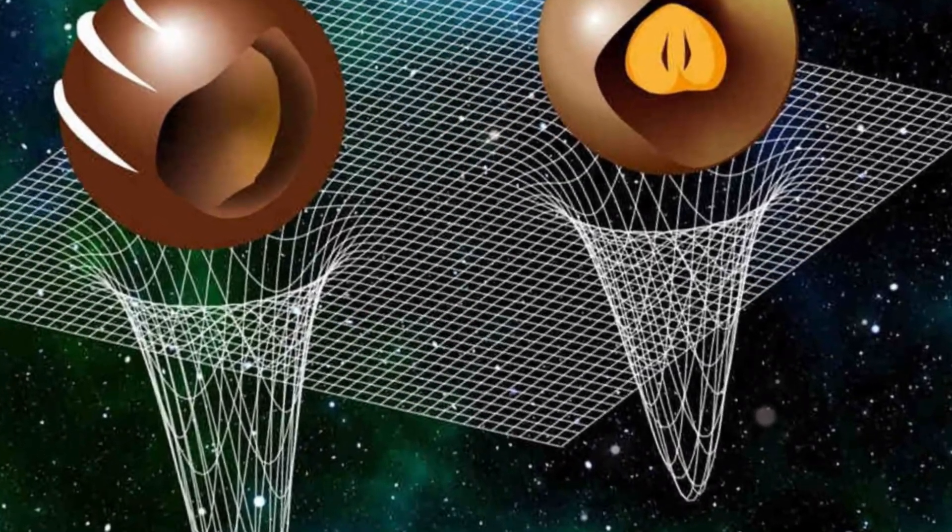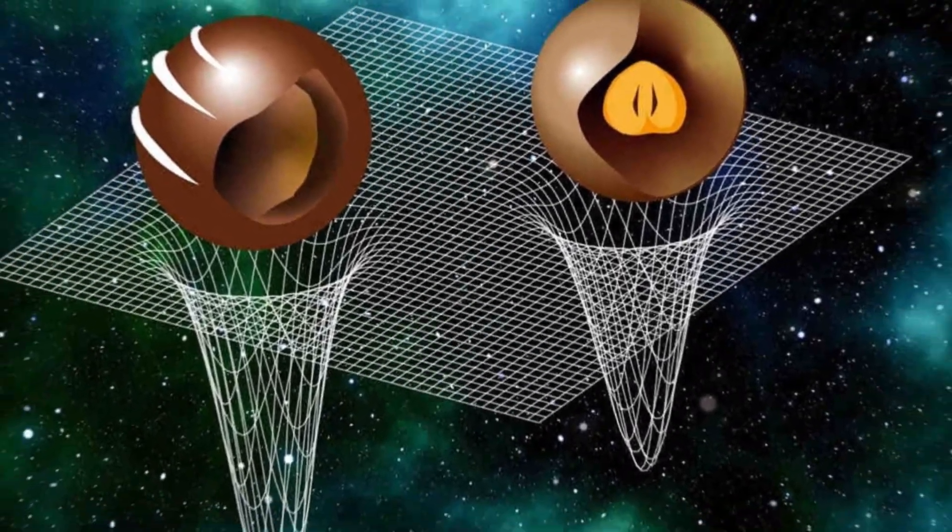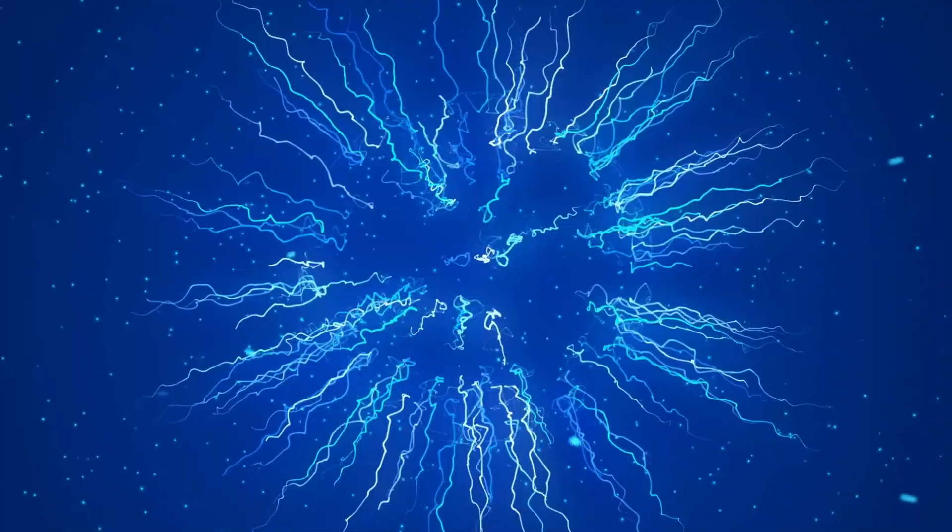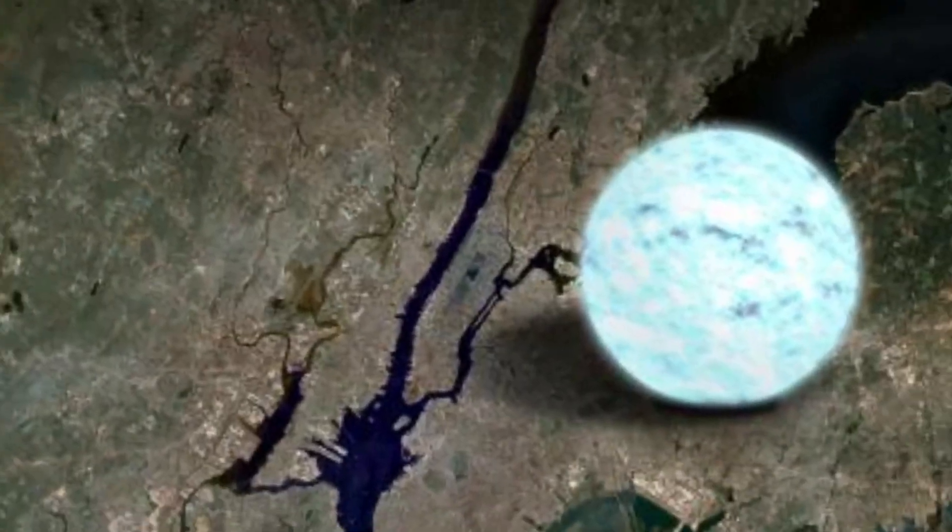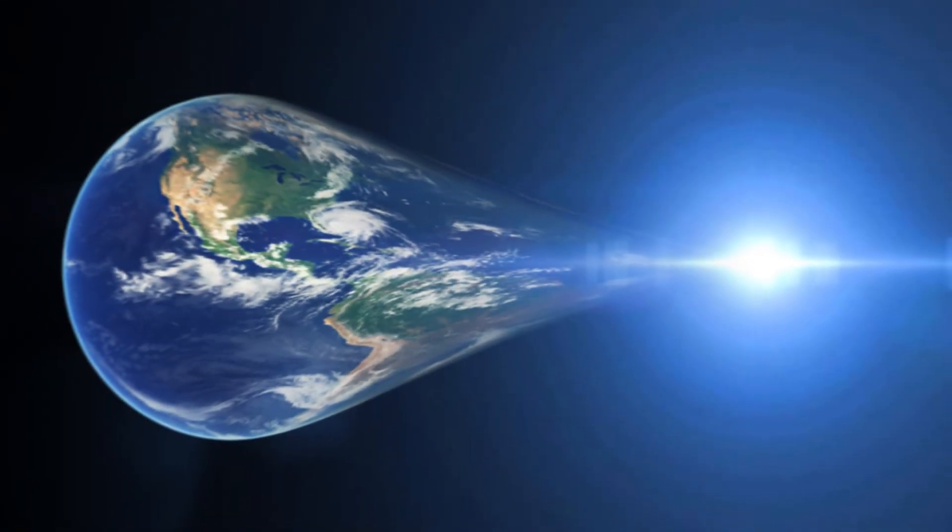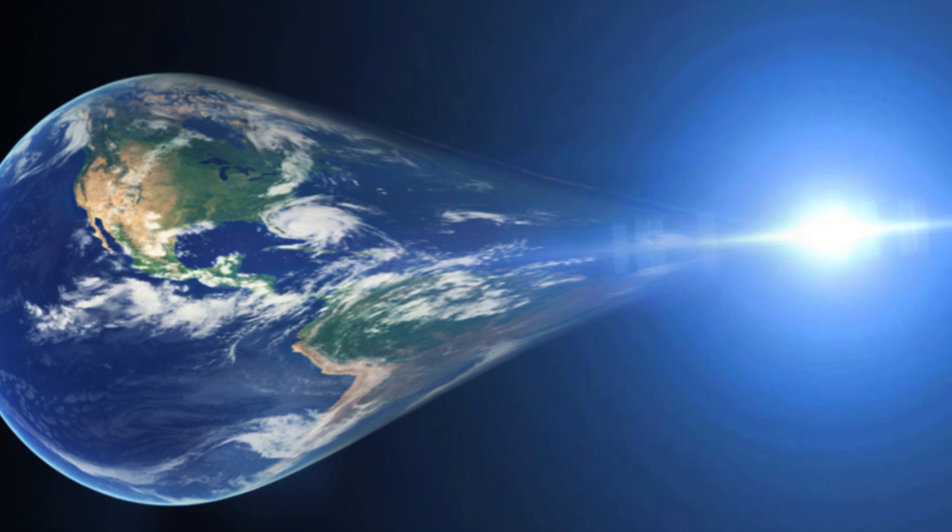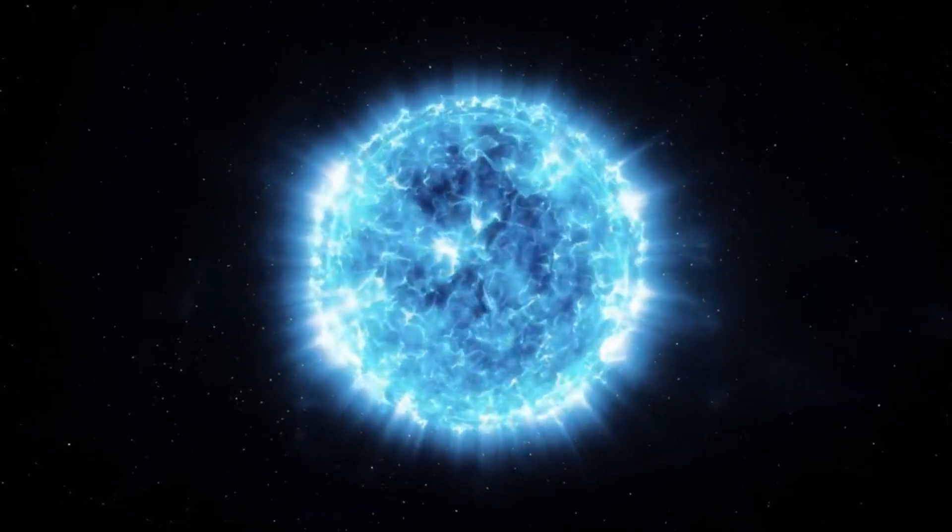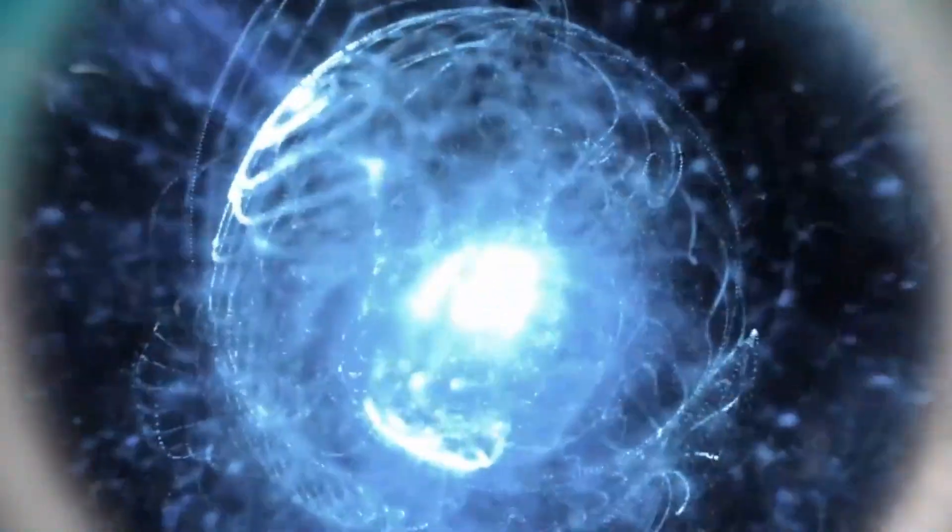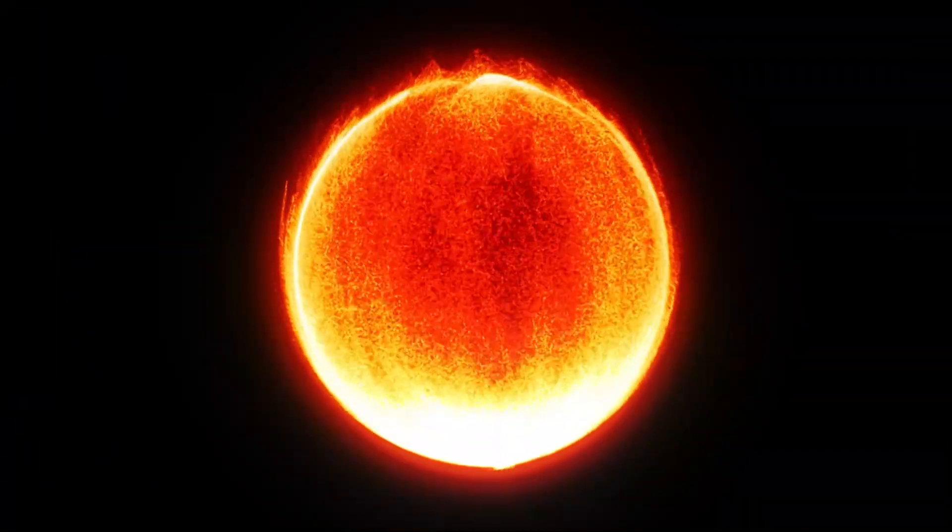To truly grasp the vastness and density of neutron stars, let's compare them to something familiar. Despite being smaller than Earth, these stars hold an enormous amount of mass. Their gravity is so intense that if you dropped something just a meter above their surface, it would plummet at incredible speeds.